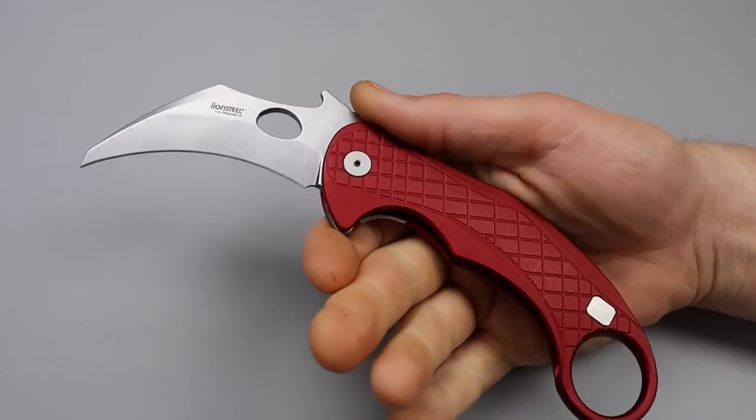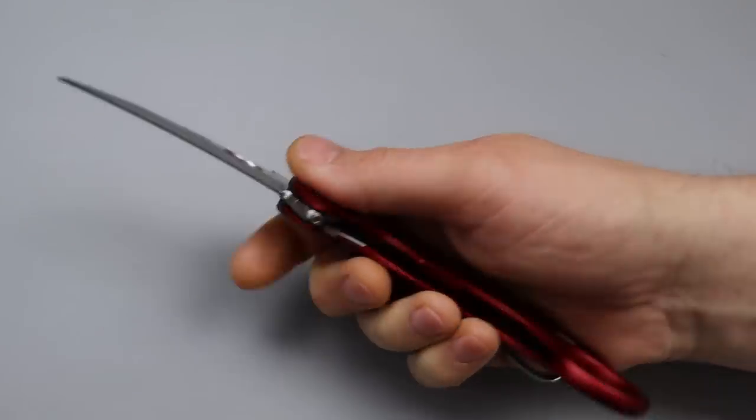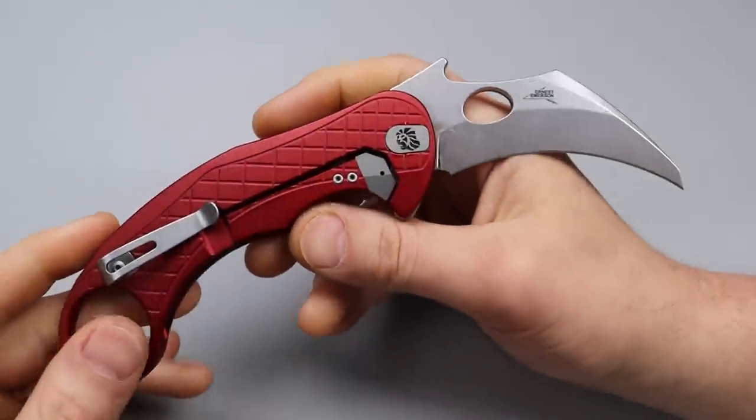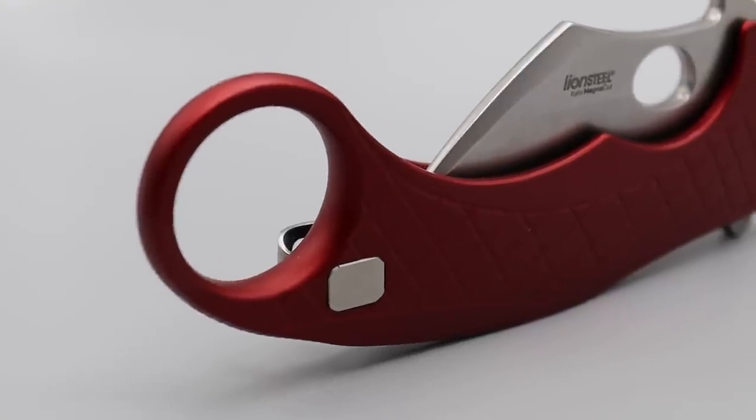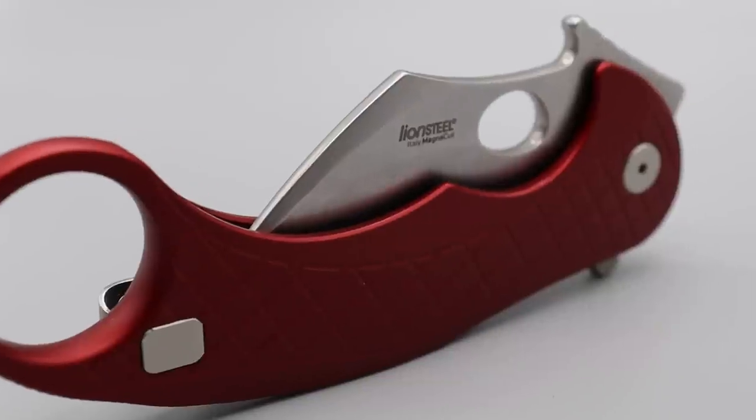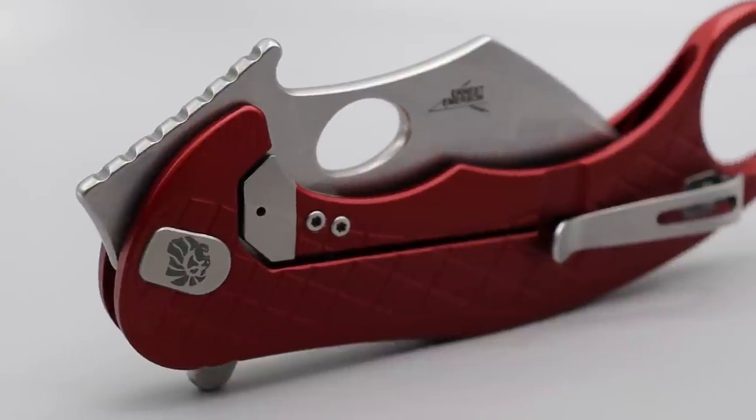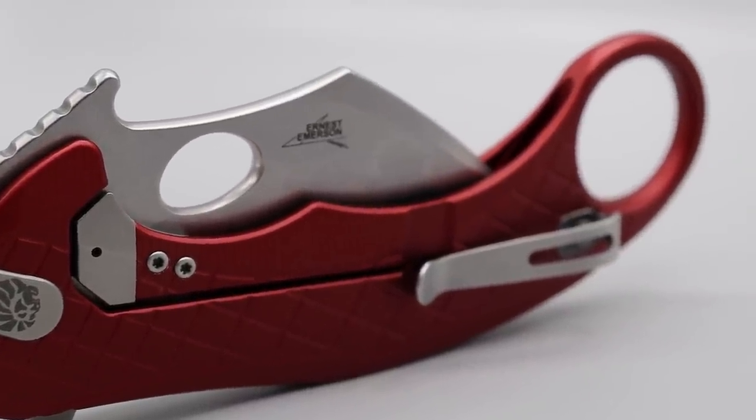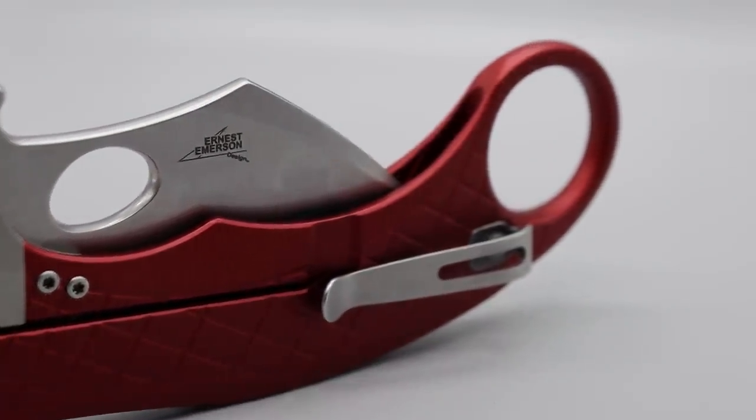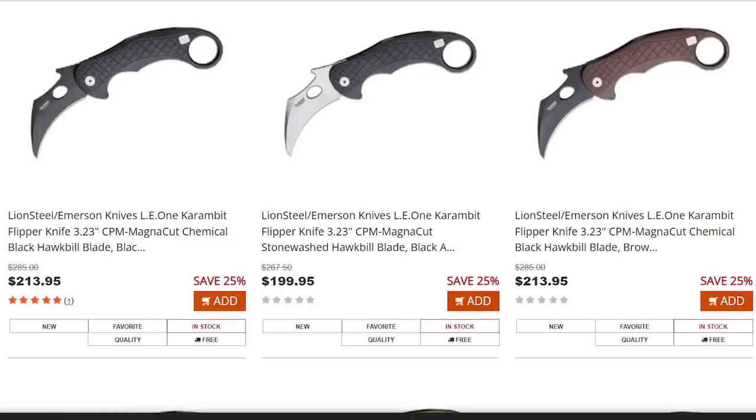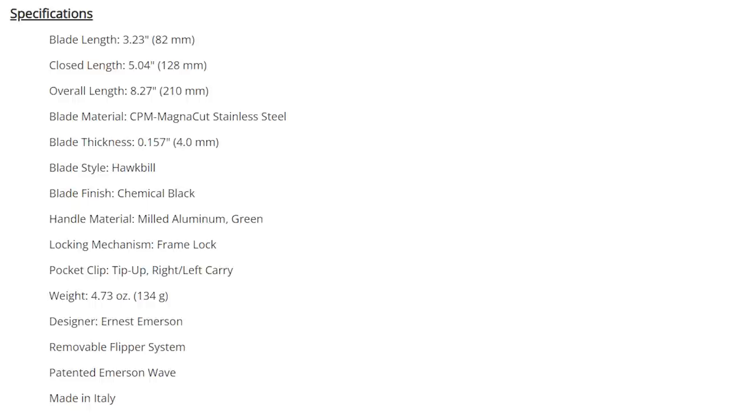Bang Neves Knives, I'm Jared, and here we have an Emerson design with Lion Steel in Magna Cut steel. Now we'll talk more about the Magna Cut here in a second. The handle looks like titanium, but it is an integral aluminum handle. Lion Steel has been doing this aluminum handle thing for quite some time now.